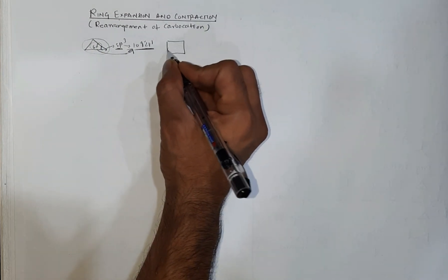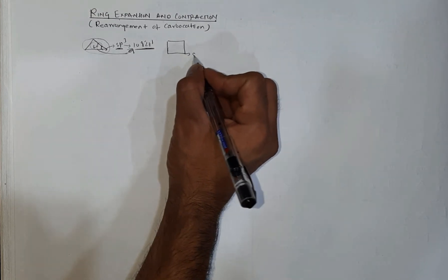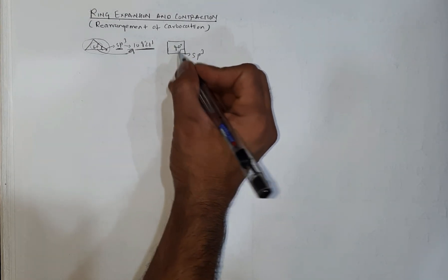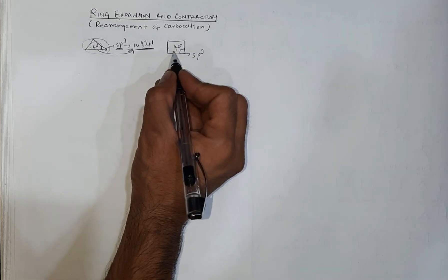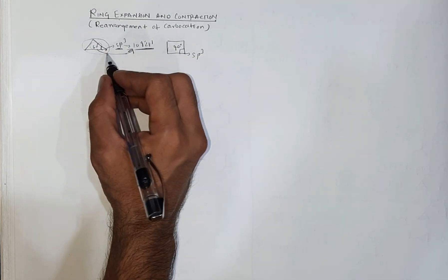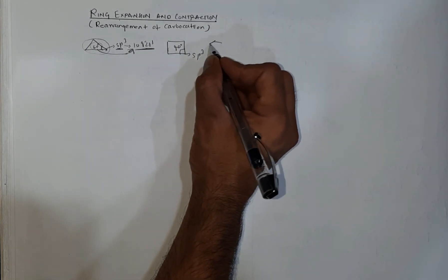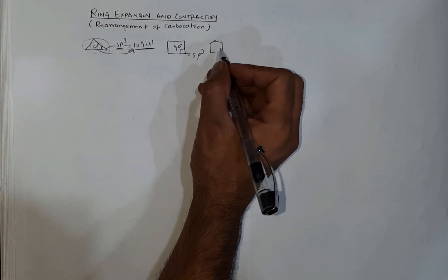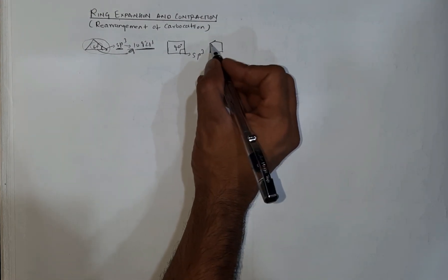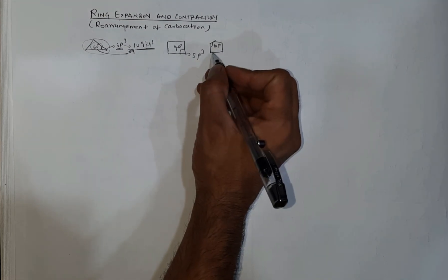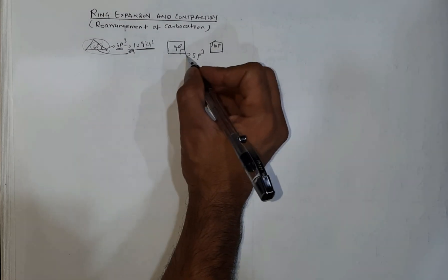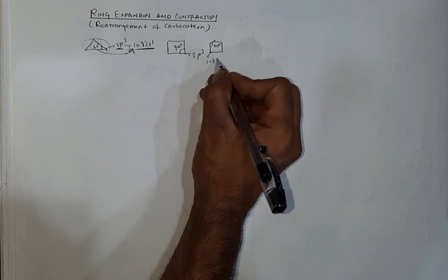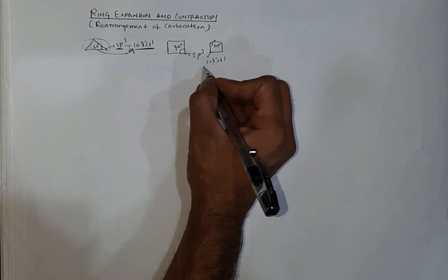Similarly, for cyclobutane, sp3 hybridization gives an ideal angle of 109 degrees 28 minutes, but the actual angle is 90 degrees, making it a little more stable than cyclopropane. For cyclopentane, the angle inside is around 108 degrees, which makes cyclopentane more stable than cyclobutane because it is close to the ideal value of 109 degrees 28 minutes.